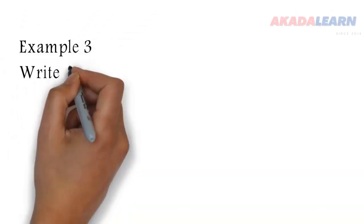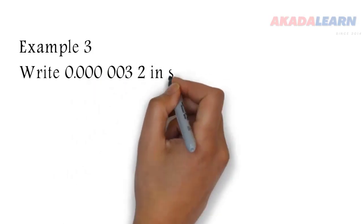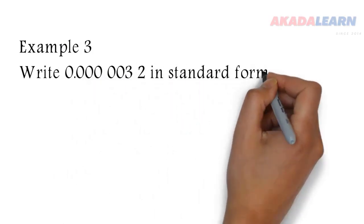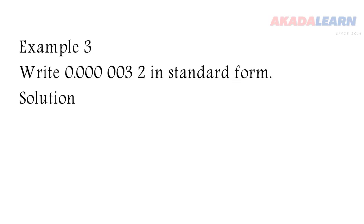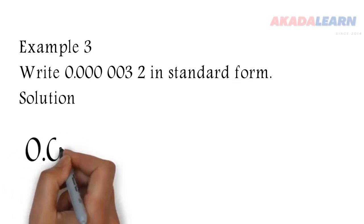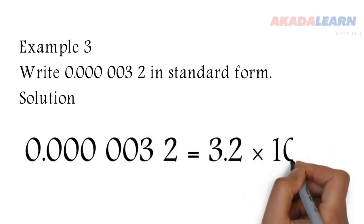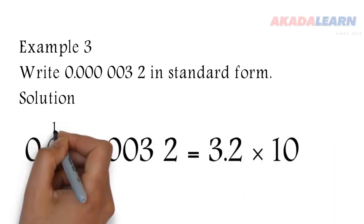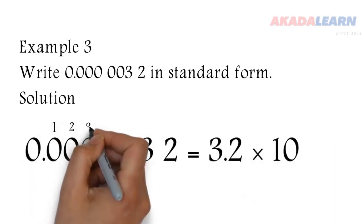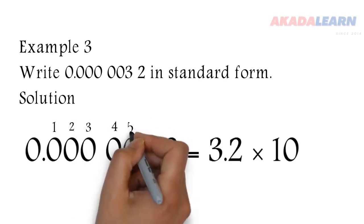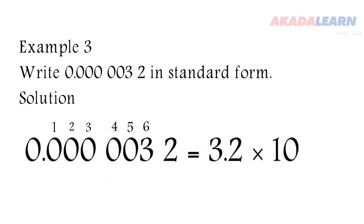Let's see example 3 now. Write 0.00000032 in standard form. This is a number less than 1, so we are going to see how to do that. It will be 3.2 times 10 raised to power—now, because it is a number less than 1, we are going to have minus for the power, so it will be minus 6.